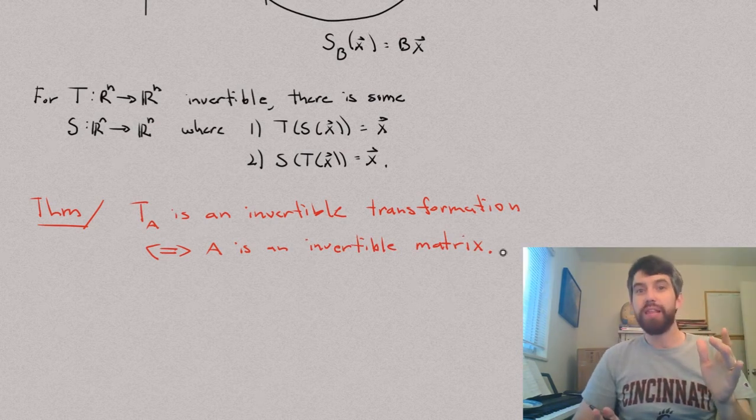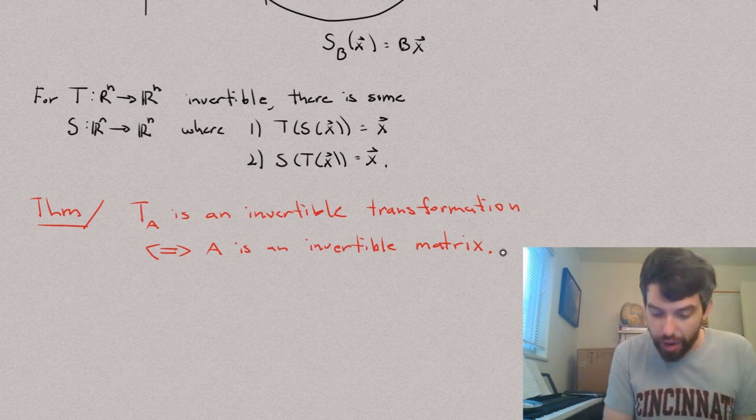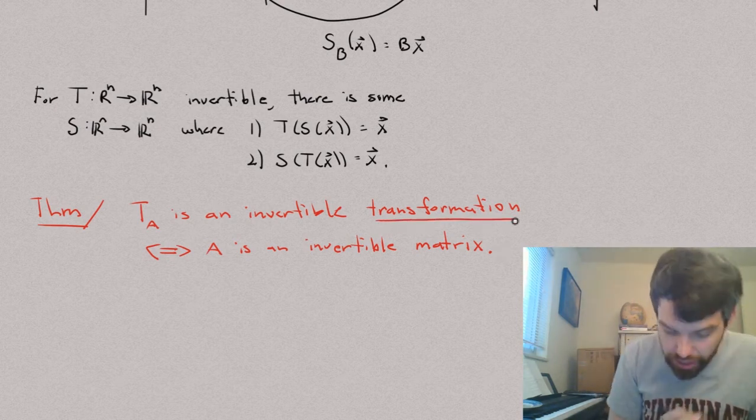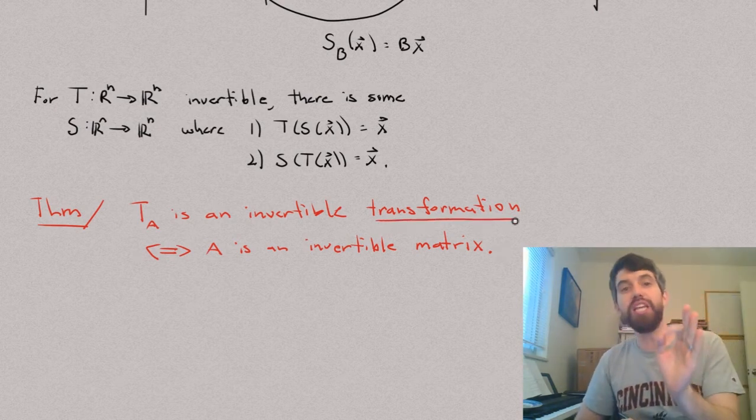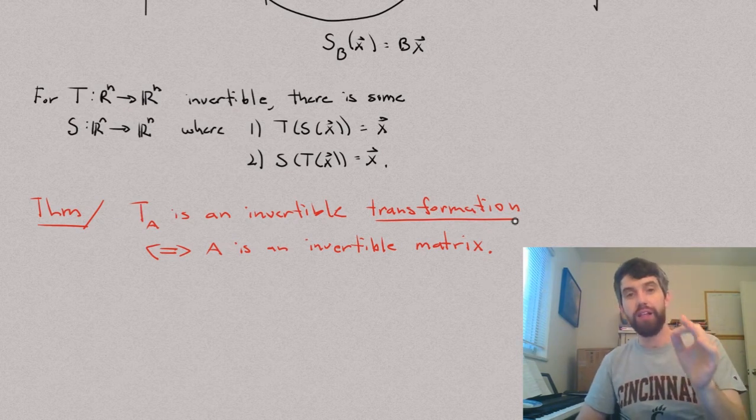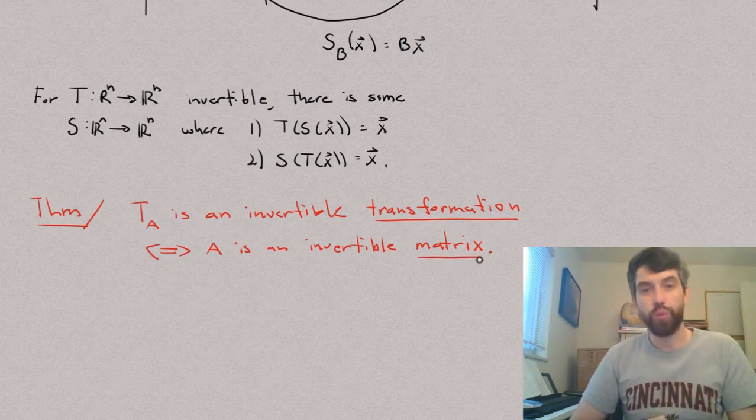So, in other words, I've said that if I have a linear transformation represented by the matrix A, then the transformation is going to be invertible precisely when, if and only if, that corresponding matrix A is going to be invertible as well.